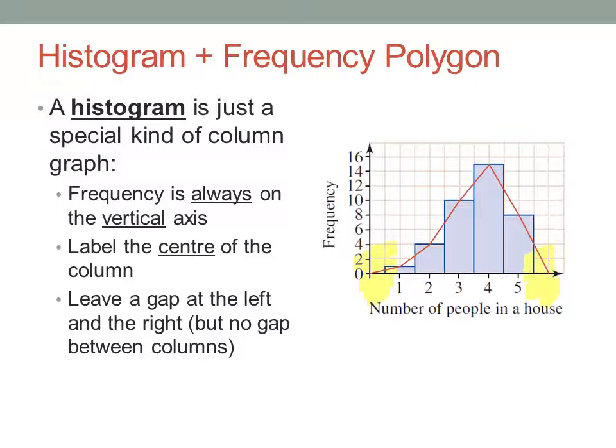And for that to work at the left and right edges, we need at least a half a column width extra space to get that line down to the zero frequency value, down to the horizontal axis on both sides where the centre of the next column would have been.